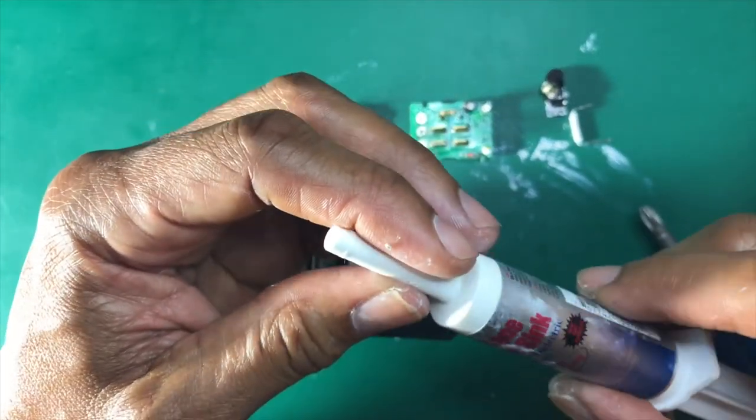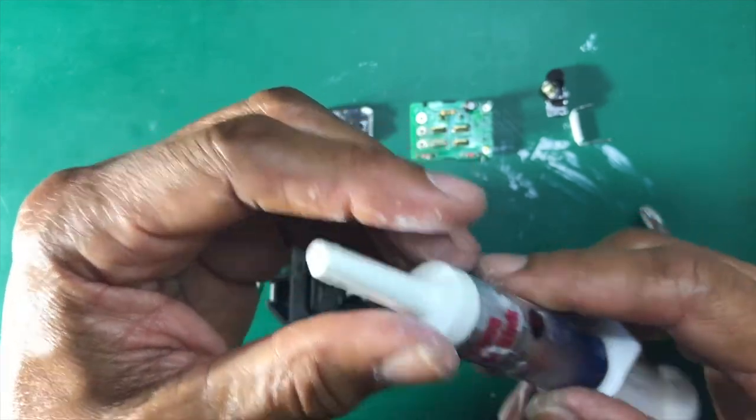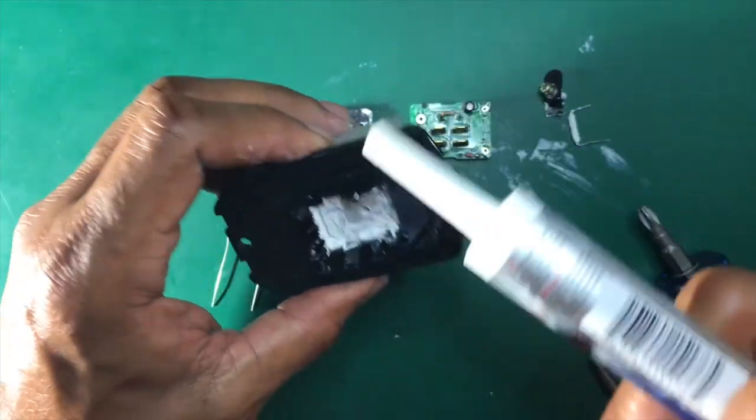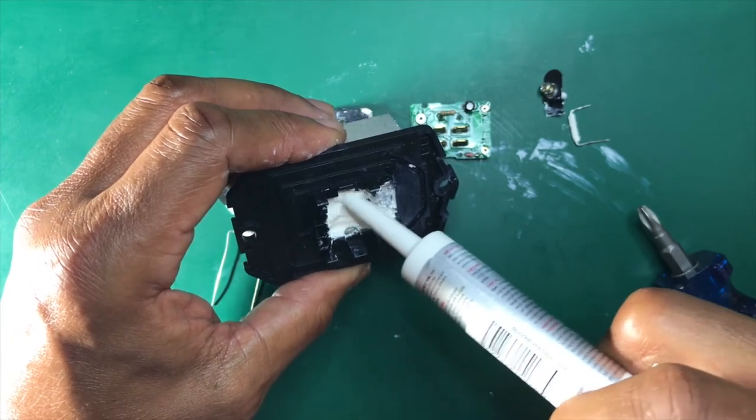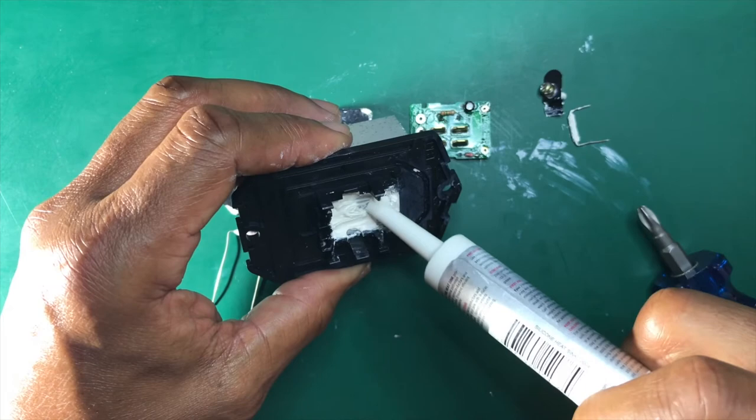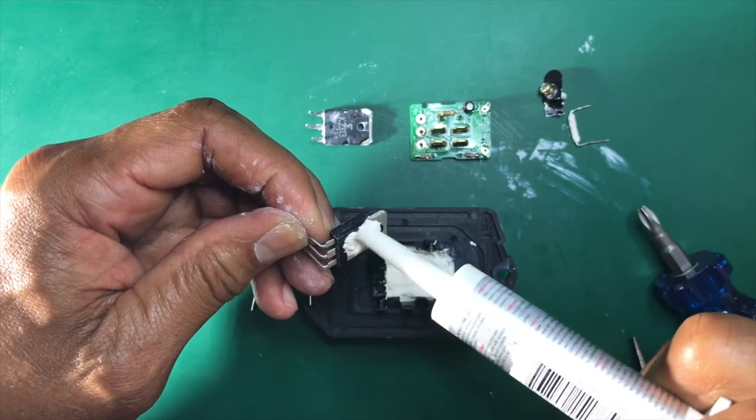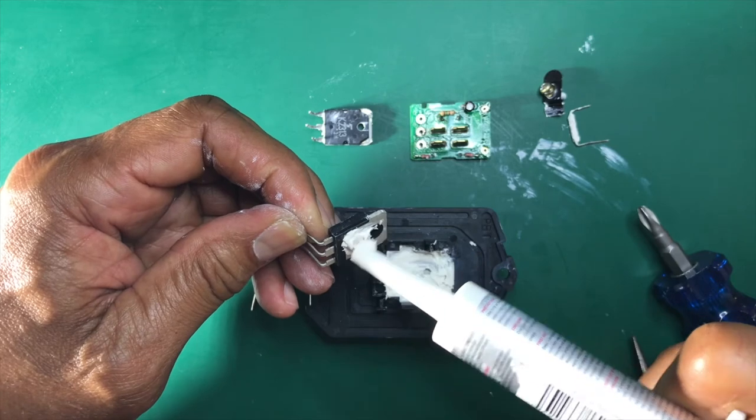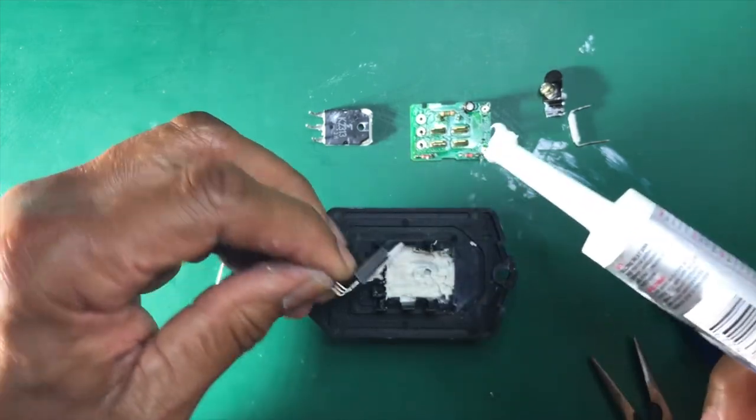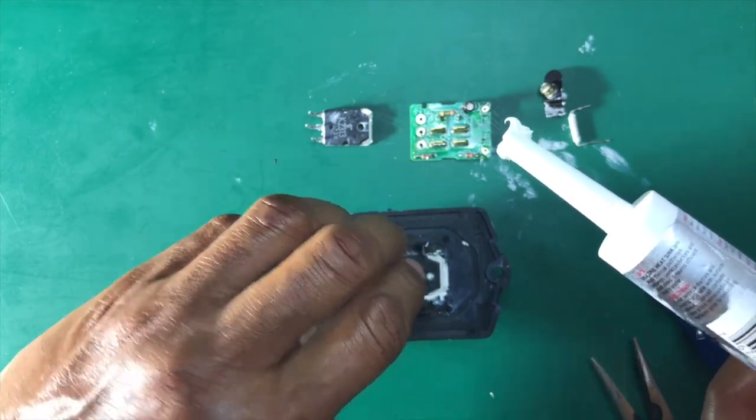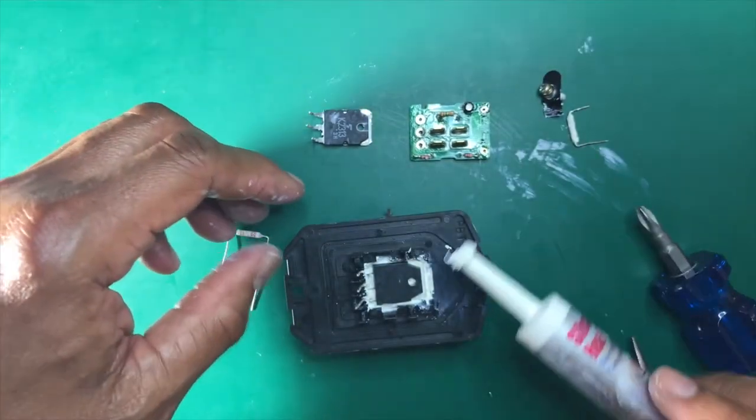We're going to use the heat sink compound. This helps with the transfer of heat - silicon heat sink compound. You can buy this at Fry's Electronics or one of the electronic stores that sells soldering supplies. We'll spread it around here. We'll get some on the semiconductor itself, the transistor. Make sure we get a nice good heat transfer. That's a little hot there, but that won't hurt anything.